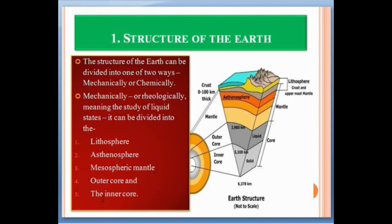The five mechanical layers are: first the lithosphere, second the asthenosphere, third the mesospheric mantle, fourth the outer core, and fifth the inner core. As you can see in this picture, the whole crust and upper mantle consist of the lithosphere. Just below the lithosphere the asthenosphere exists, and below the asthenosphere the mantle is present, followed by the outer core and inner core.